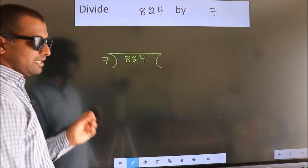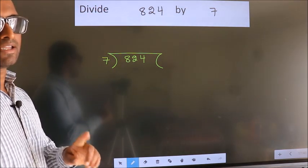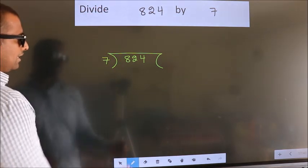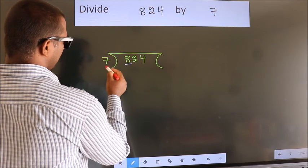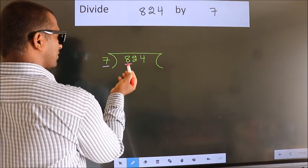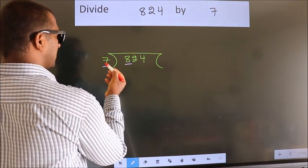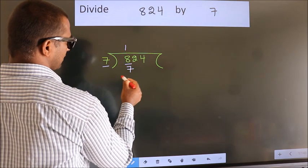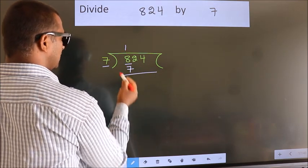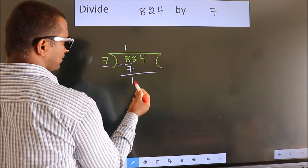This is your step 1. Here we have 8, here 7. A number close to 8 in 7 table is 7 once 7. Now we should subtract. We get 1.